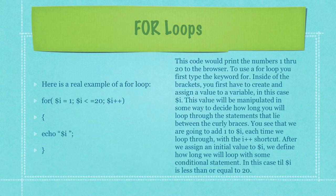This code would print numbers 1 through 20 to the browser. To use a for loop, you first type the keyword for. Inside of the brackets, you first have to create and assign a value to a variable, in this case, i.